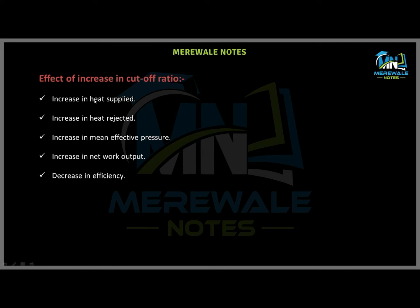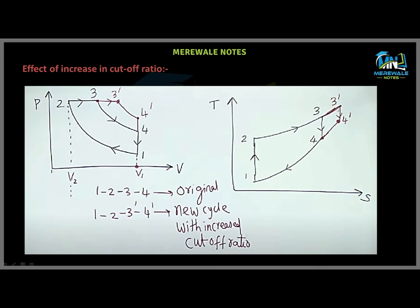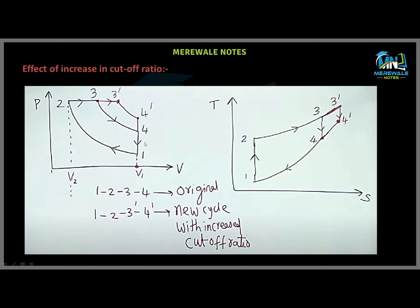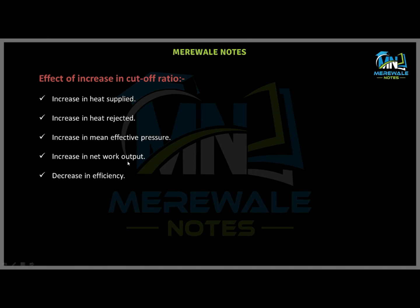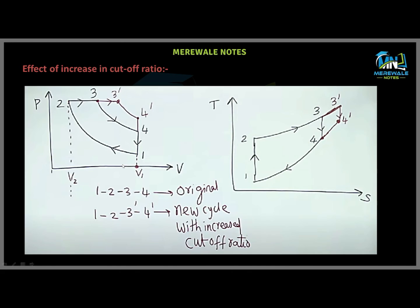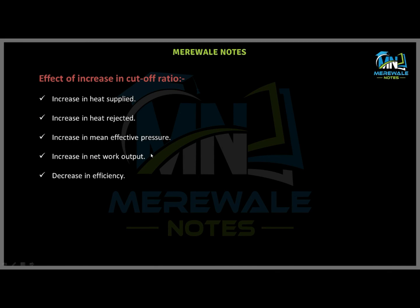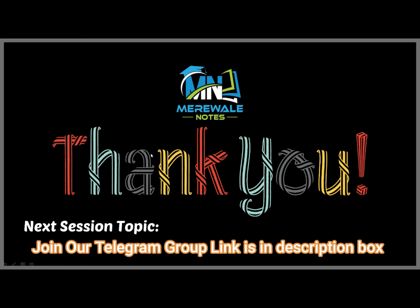To summarize the main effects of increasing the cutoff ratio: there is an increase in heat supplied (from 2-3 to 2-3-dash), an increase in heat rejection (from 4-1 to 4-dash-1), an increase in mean effective pressure — since mean effective pressure depends on swept volume and net work output — and an increase in net work output. However, since the heat supplied increases proportionally more, there is a net decrease in efficiency. Thank you for watching this video, please share and subscribe to the channel.